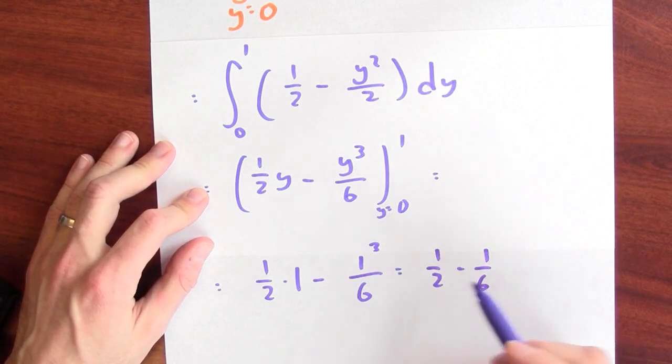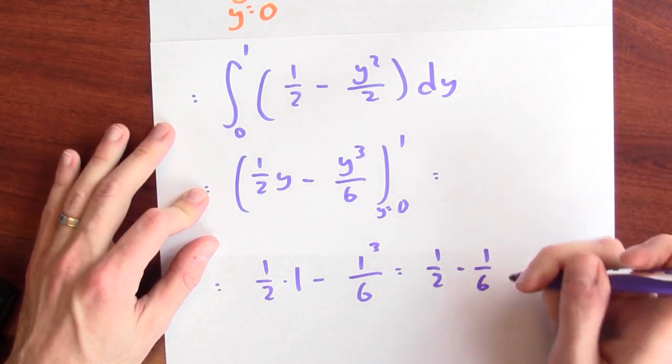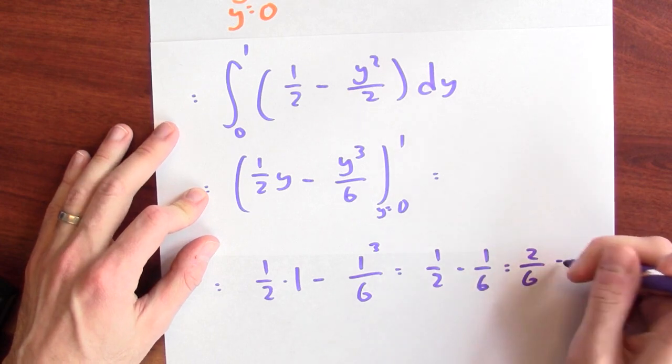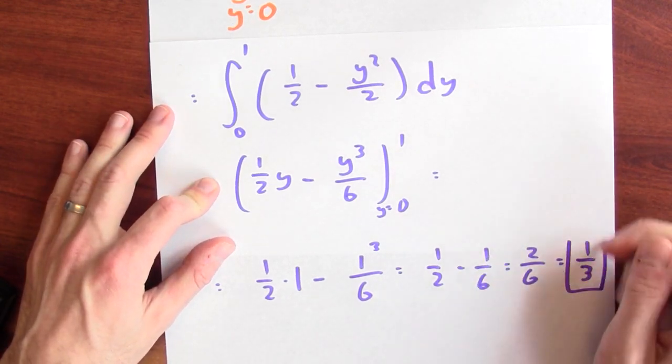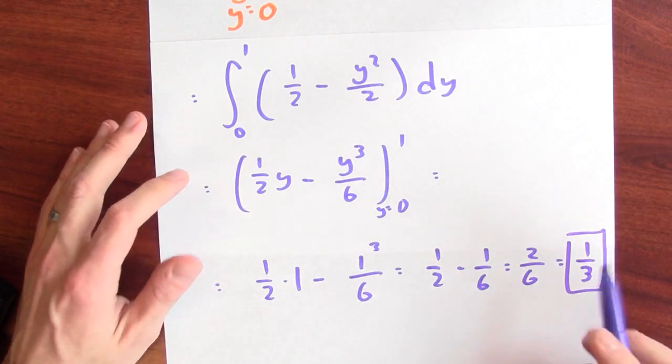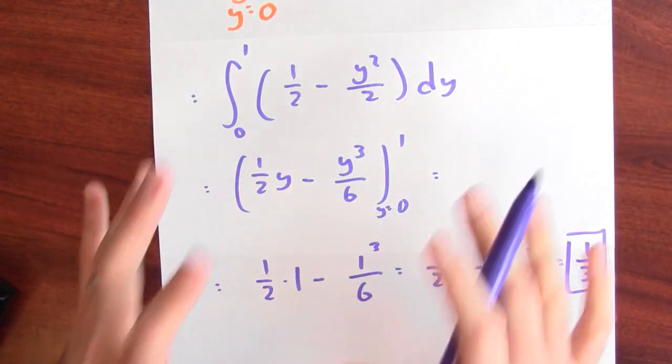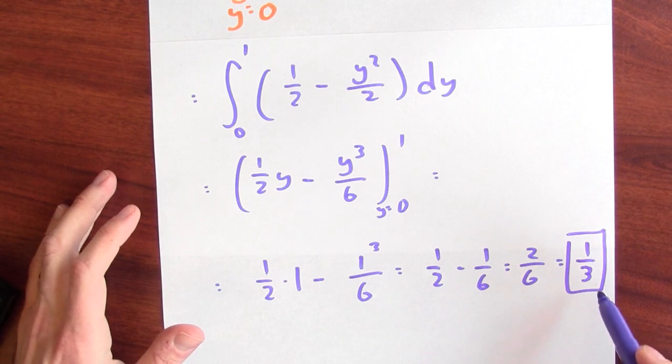And 1 half, well, that's 3 sixths. So 3 sixths minus 1 sixth is 2 sixths, which you might write as 1 third. So the area of that shark fin shaped region is 1 third of a square unit.